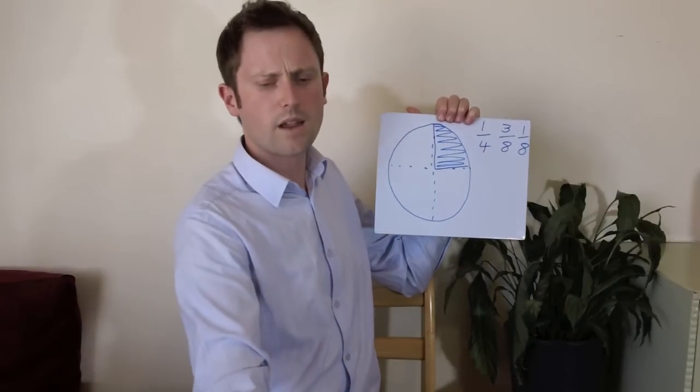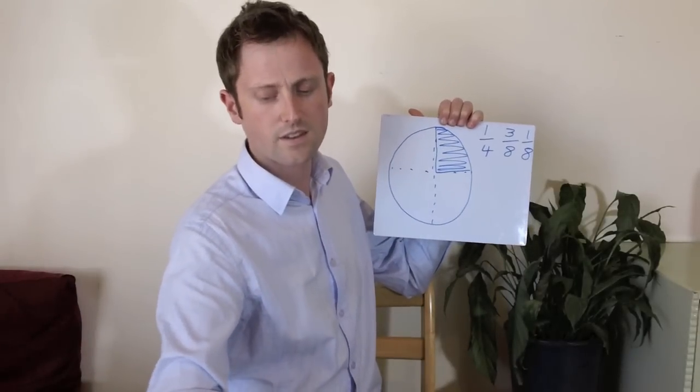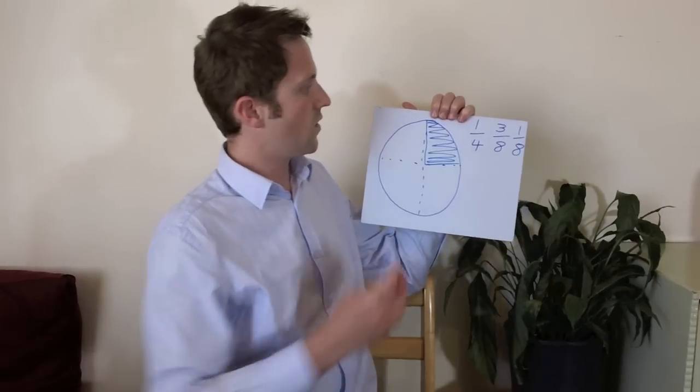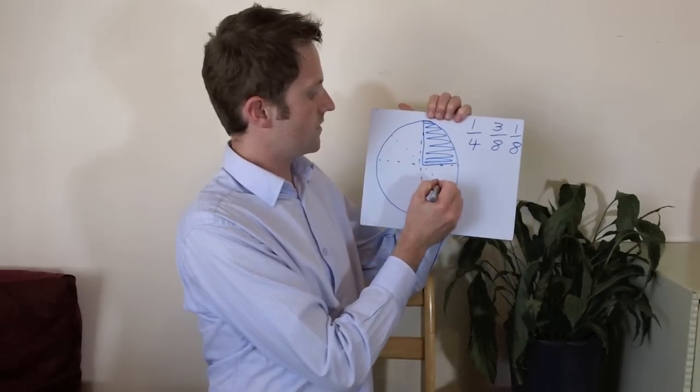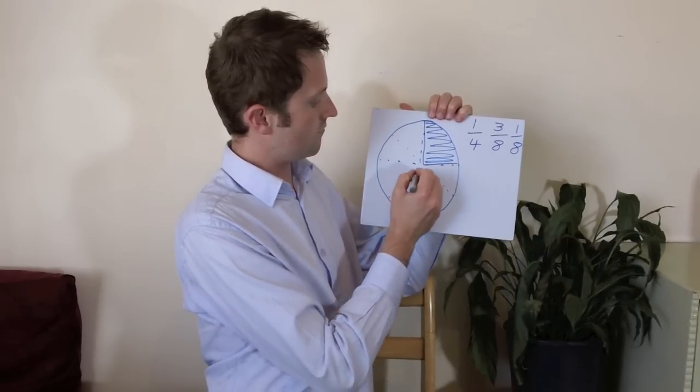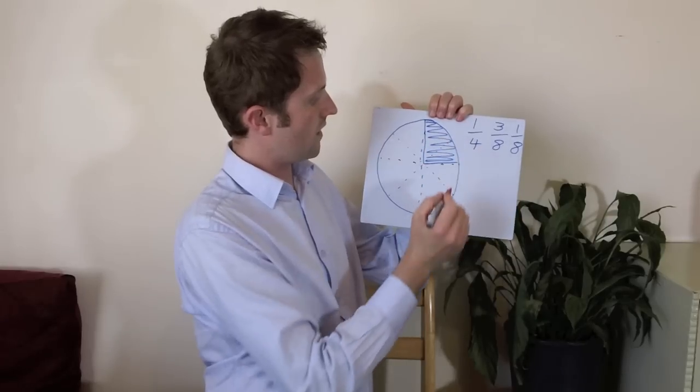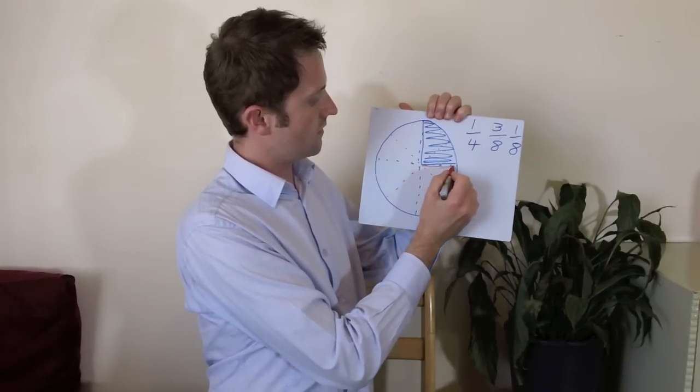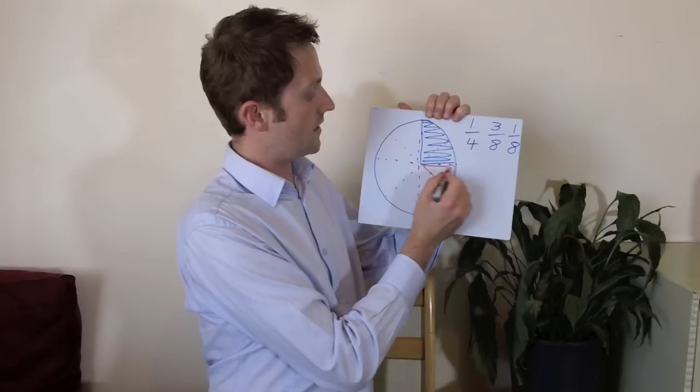Alright now maybe I'm playing against my class and they're going to pick one eighth. So divide the circle up into roughly eights and shade in one eighth.